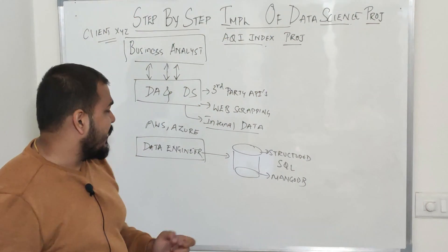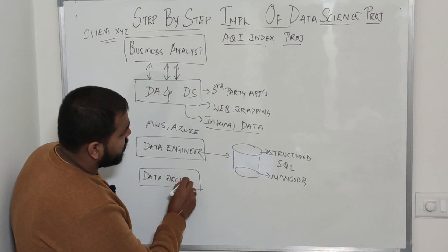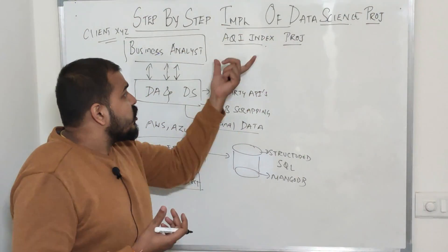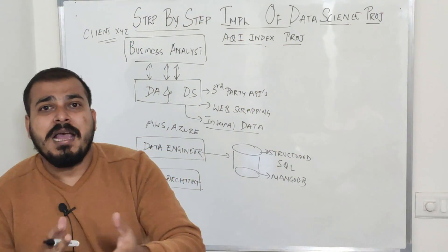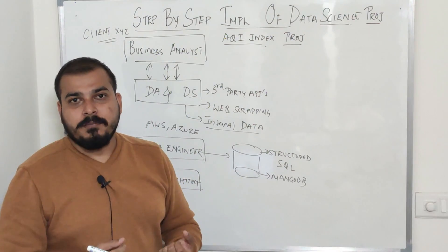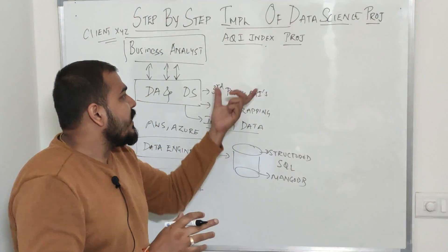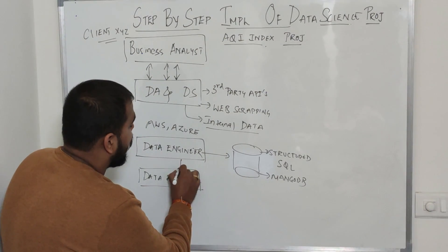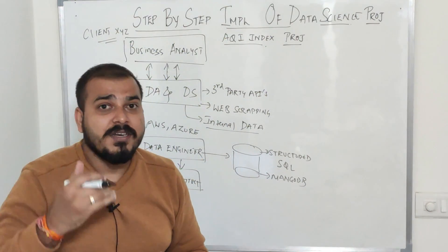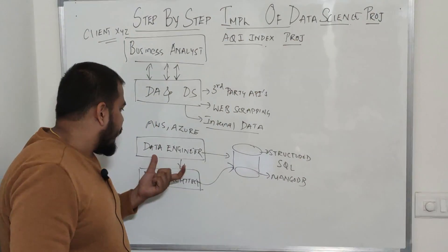Within the data engineering team there is also the role of a data architect. For predicting the air quality index, you may need maximum temperature, humidity, pressure, and other factors from third-party APIs. However, the frequency of data may differ — for example, maximum temperature may come hourly while humidity comes every 10 minutes. The data architect designs the whole structure: how data should be extracted, at what frequency, and how it should be stored in the database.